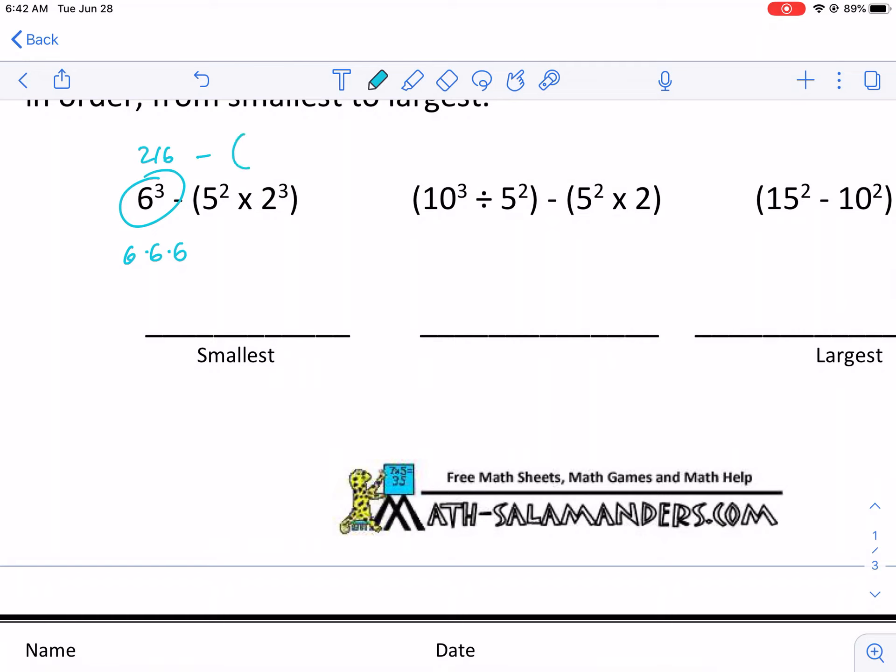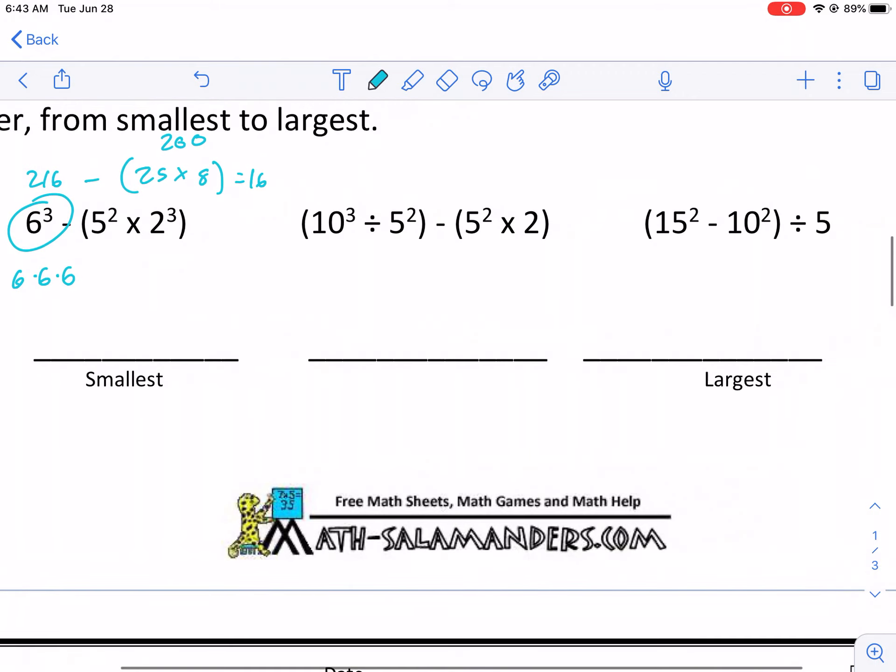I'm not writing it down below here. Minus 5². Well, I know that's 25. And I keep this in parentheses times eight. So I need to do 25 times eight. And then I need to subtract that from 216. 25 times eight was 200. And then I get 216 minus 200. That is 16. So that's pretty small. But maybe some of these other ones are smaller.